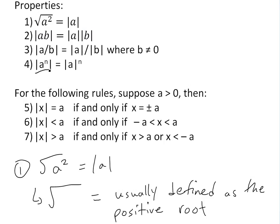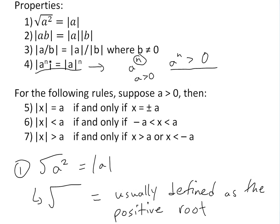For property four: the absolute value of A to the power of N is equal to the absolute value of A to the power of N. With any power function, A to the N does not by itself change the sign — only the sign of A affects it. If A is greater than zero, then A to the N is always going to be greater than zero. So if A is negative, the absolute value just takes the positive of A, because N can't make it negative.